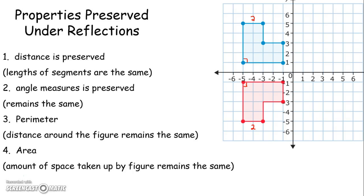Because the lengths of your sides remain the same, your perimeter remains the same. So for instance, the perimeter of this is 1, 2, 3, 4, 5, 6, 7, 8, 9, 10, 11, 12, 13, 14, 15, 16. So the perimeter of that is 16 units.